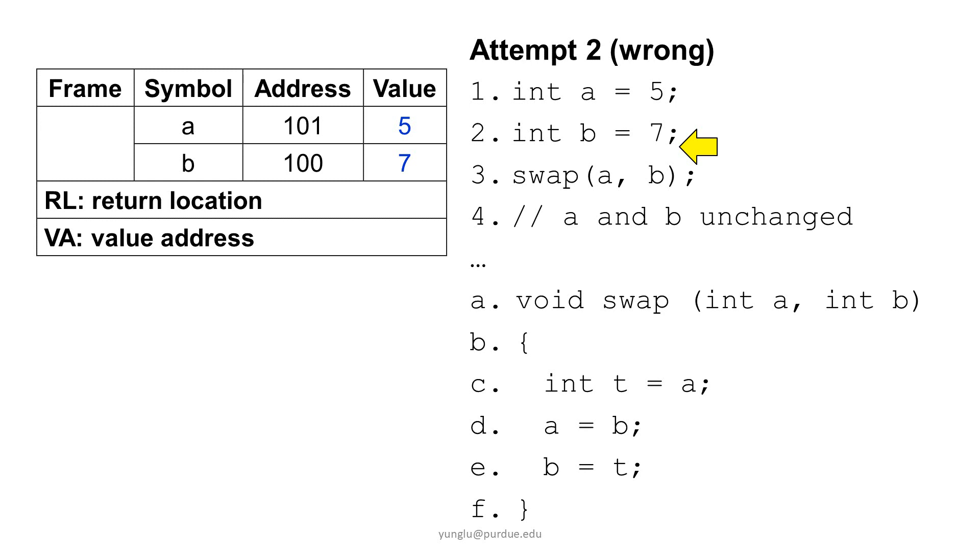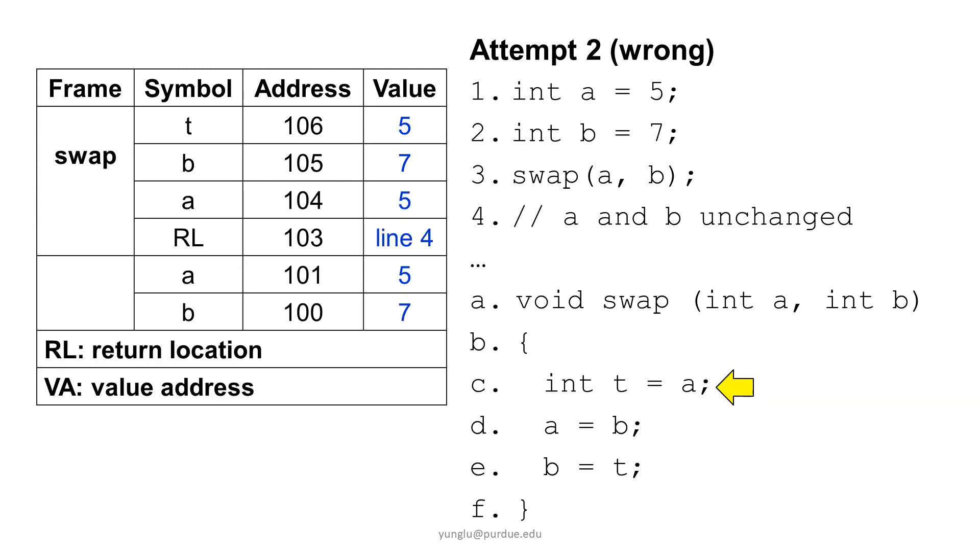Since this is a function call, let's use the stack memory to understand how things work. Suppose the program has just finished line 2. The value of a is 5 and the value of b is 7. The program is ready to call the swap function. At this moment, the stack memory is shown here. The program calls the swap function and has finished the first line of the function. The stack memory is shown here.